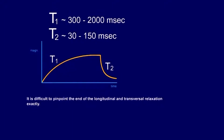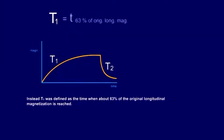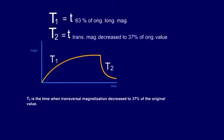It is difficult to pinpoint the end of the longitudinal and transversal relaxation exactly. Thus, T1 and T2 were not defined as the time when relaxation is complete. Instead, T1 was defined as the time when about 63% of the original longitudinal magnetization is reached. T2 is the time when transversal magnetization decreased to 37% of the original value. These percentages are derived from a mathematical equation, but we do not want to go into more detail here.